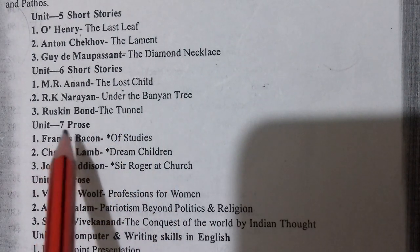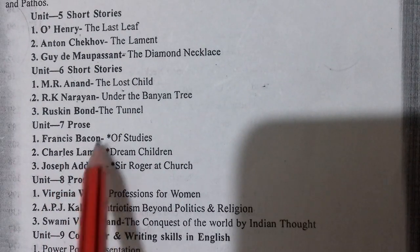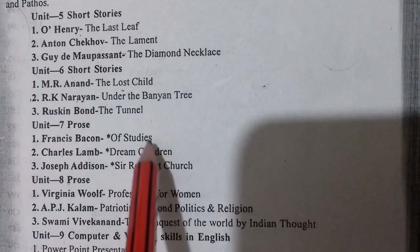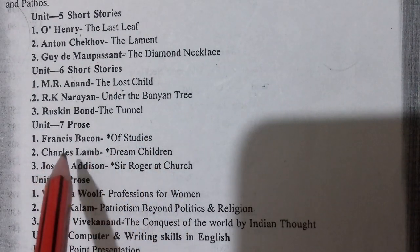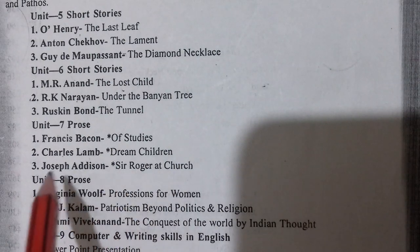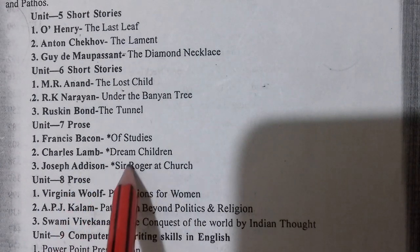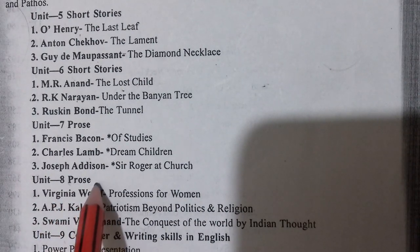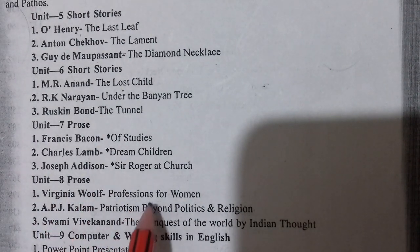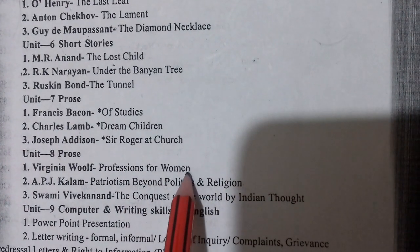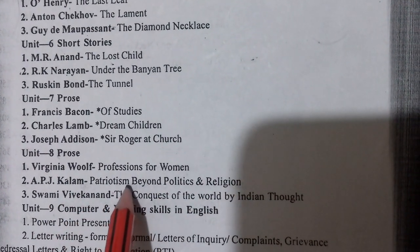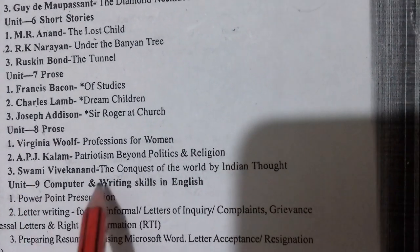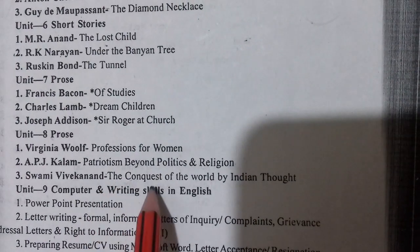Unit seventh will be based on prose and includes Francis Bacon's essay 'Of Studies,' Charles Lamb's 'Dream Children,' and Joseph Addison's essay 'Sir Roger at Church.' Unit eighth is again prose and includes Virginia Woolf's 'Professions for Women,' A.P.J. Abdul Kalam's 'Patriotism Beyond Politics and Religion,' and Swami Vivekananda's 'The Conquest of the World by Indian Thought.'